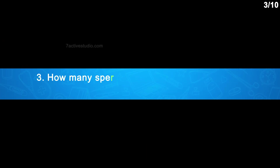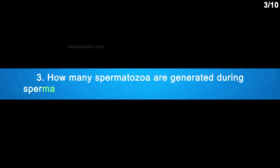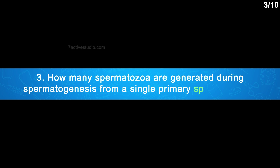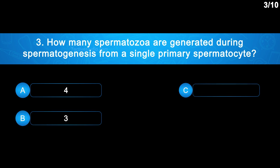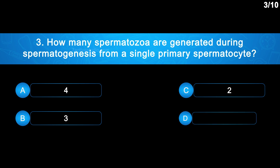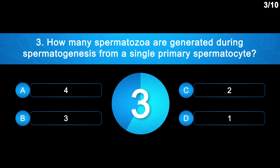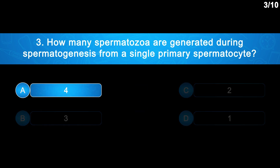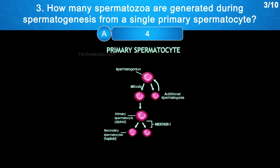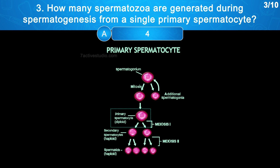Question No. 3: How many spermatozoa are generated during spermatogenesis from a single primary spermatogonium? Four haploid spermatozoa are produced from a single diploid spermatogonium.